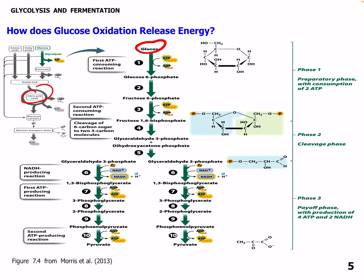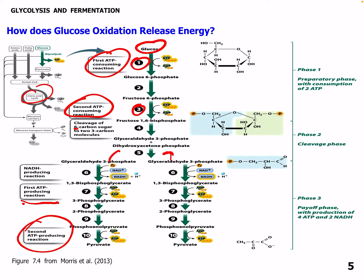So we have glucose. In reaction one, we have our first ATP-consuming reaction. In step three, we have our second ATP-consuming reaction — so that's two. Step four, we have the cleavage of the six-carbon sugar into two three-carbon molecules — this is when our pathway splits. In glycolysis, we have basically two pathways activating at the same time. Each glycolysis nets two pyruvates. You have to be careful when you read some textbooks, because they'll just look at one pathway at once, but it's actually happening twice.